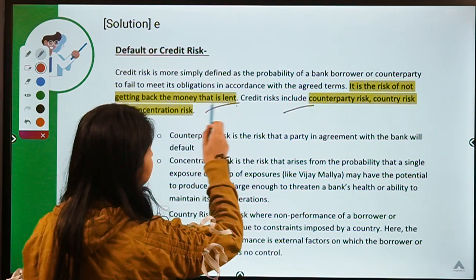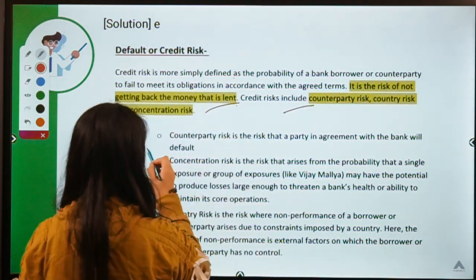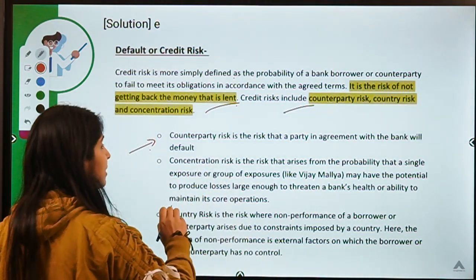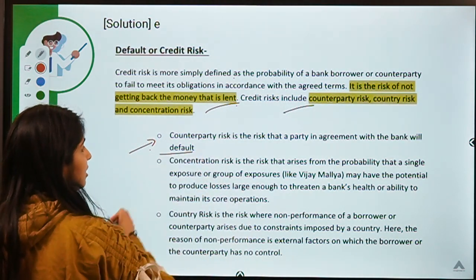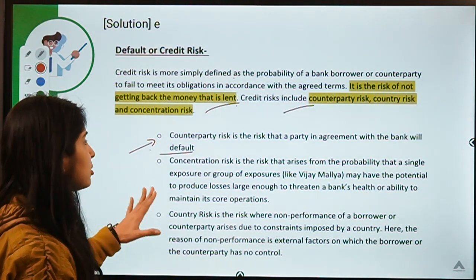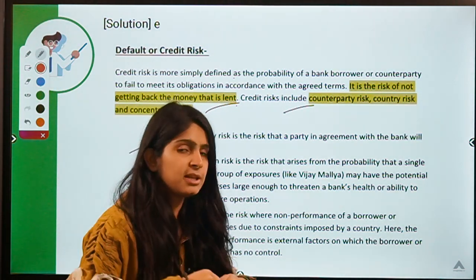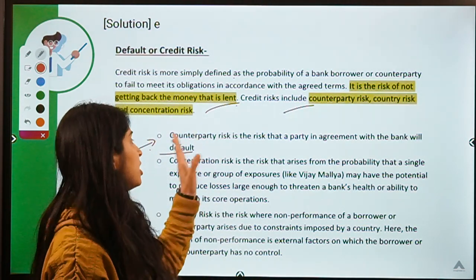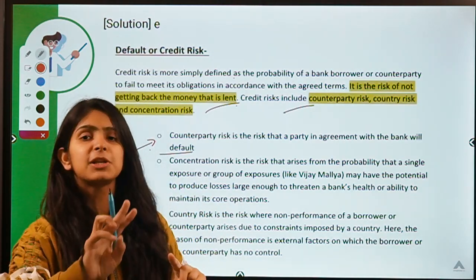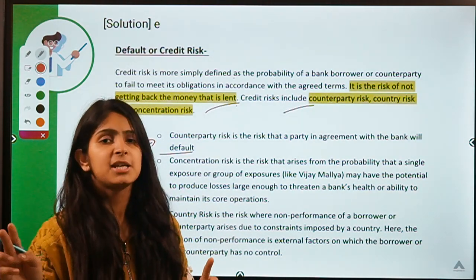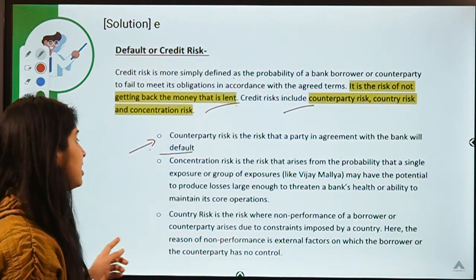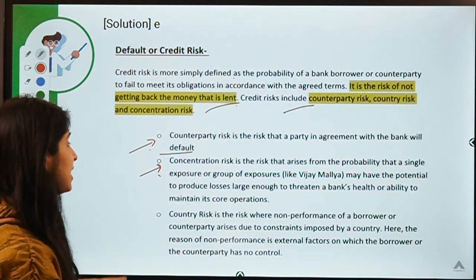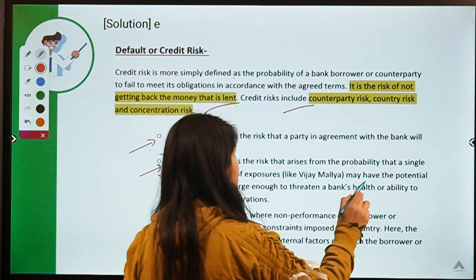Counterparty risk is very simple — the party to which you are lending is not going to pay you back. The counterparty, or the opposite party, is not able to fulfill its obligation. Concentration risk arises from the probability that a single exposure or a group of exposures may have the potential to produce losses large enough to threaten a bank's health or ability to maintain its core operations.